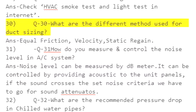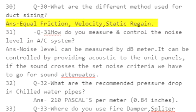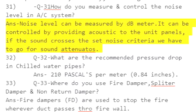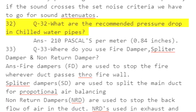Q30: What are the different methods used for duct sizing? Answer: Equal friction, velocity, static regain. Q31: How do you measure and control the noise level in an AC system? Answer: Noise level can be measured by a dB meter. It can be controlled by providing acoustic panels to the unit. If the sound crosses the set noise criteria, we have to go for sound attenuators.